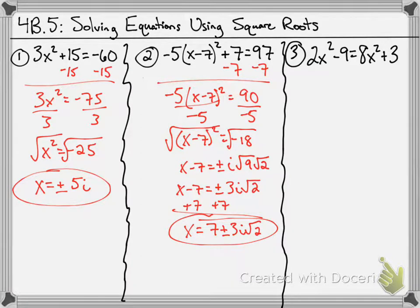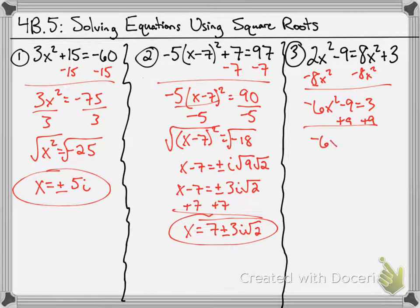Let's pick a term and move it. I'm going to subtract 8x squared from both sides. Negative 6x squared minus 9 equals 3. I'm going to add 9 to both sides. Negative 6x squared equals 12. Divide by negative 6. We get x squared equals negative 2.